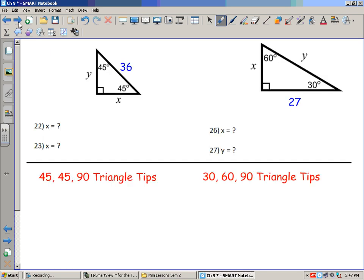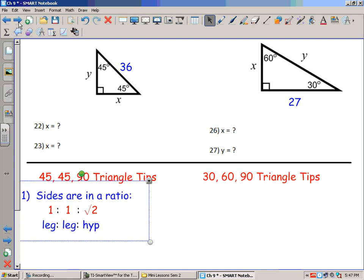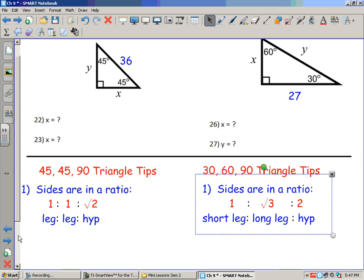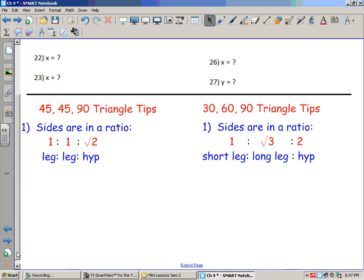Next question: 45-45-90 and 30-60-90. Sides in a 45-45-90 triangle are in a ratio of 1, 1 to root 2, or leg, leg to hypotenuse. Sides in a 30-60-90 are in a ratio of 1, root 3 to 2, or short leg, long leg, hypotenuse. Just to give you an example of what this would look like.